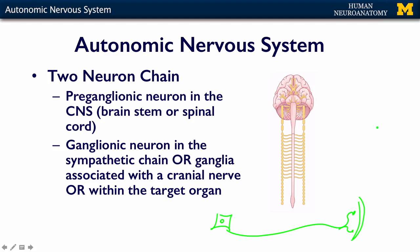So to summarize: somatic is one neuron, one axon out to the muscle. Autonomics — both parasympathetic and sympathetic — are a two-neuron chain. Neuron one is in the CNS, either the brain stem or spinal cord. That neuron synapses with the neuron in a ganglion, pictured here. The ganglionic neuron then sends its axon to the target, which is going to be smooth muscle, cardiac muscle, or a gland.